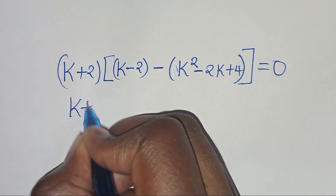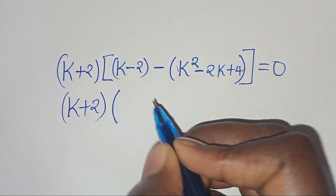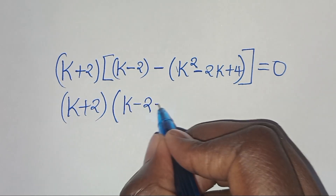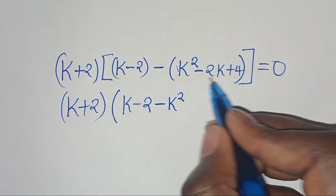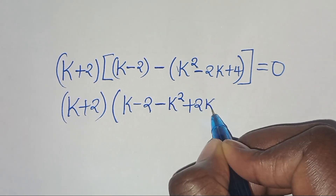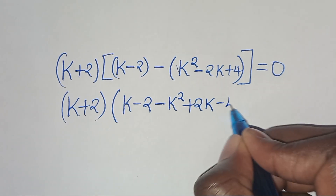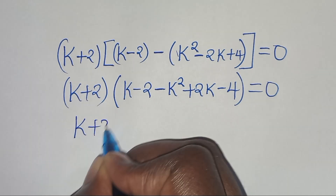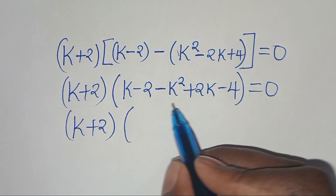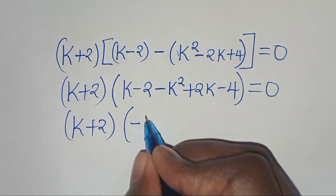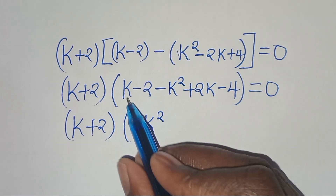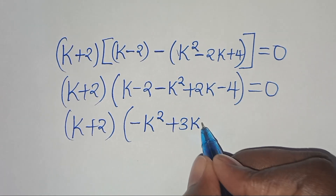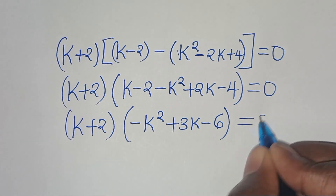Expanding inside the bracket: (k − 2) minus k squared plus 2k minus 4 equals 0. Rearranging: minus k squared plus 3k minus 6, all inside (k + 2), equals 0.